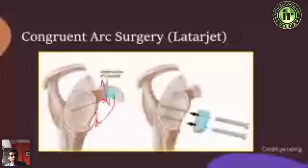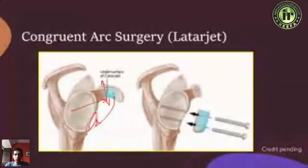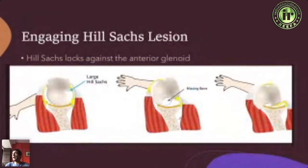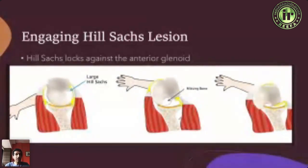If there is a coracoid injury, they can take a piece of iliac crest bone to fix the area, but surgeons need to be aware of this beforehand. So with congruent arc surgery, everyone thought they'd solved the problem of shoulder dislocations.